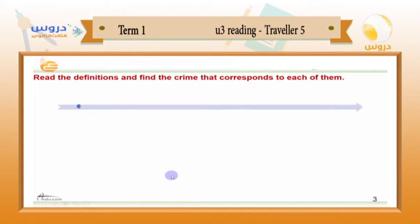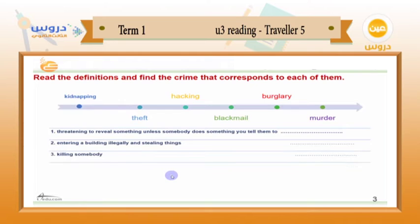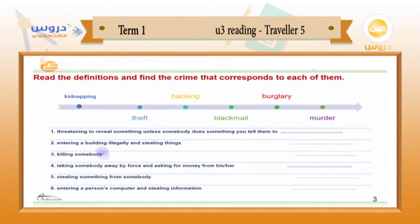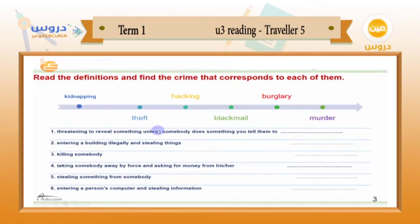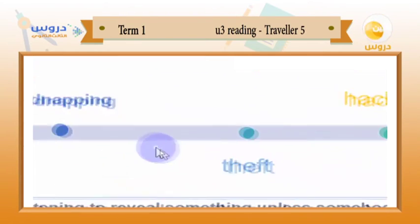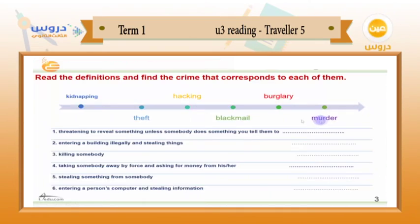In this slide I need you to read the words in order to put them in the right order in the following sentences. Read the definitions and find the crime that corresponds to each of them. We have almost six words we should read and match to the right sentence. The first words are: kidnapping, theft, hacking, blackmail, burglary, and murder.